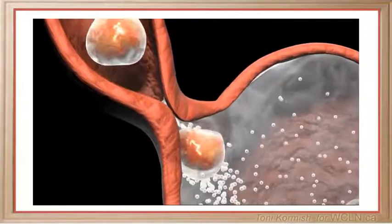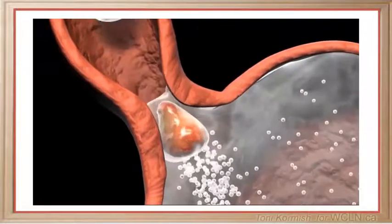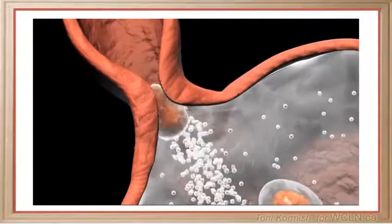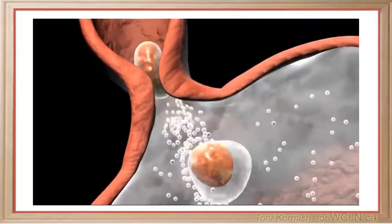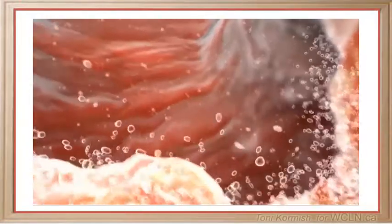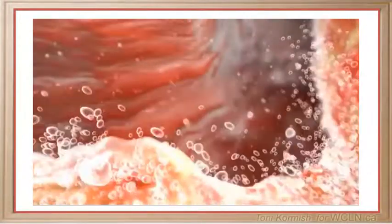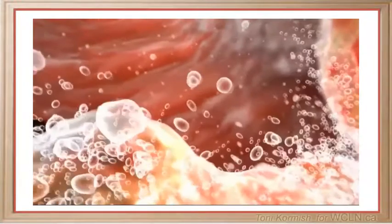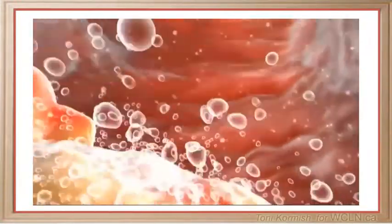The bolus of food is then swallowed and passes through the esophagus, past the cardiac sphincter, into the stomach where gastric juices are added and the bolus is churned by peristalsis. The bolus is now referred to as acidic chyme, which is secreted into the small intestine through the pyloric sphincter.